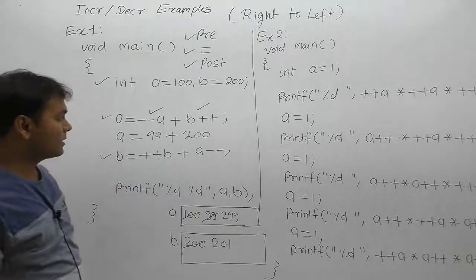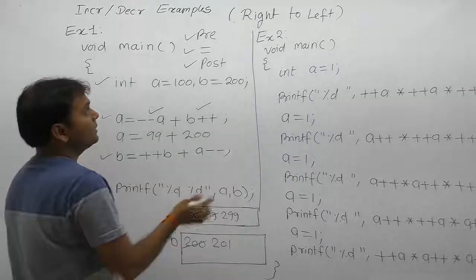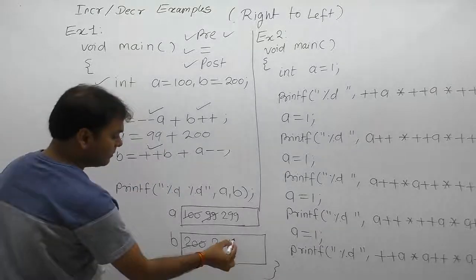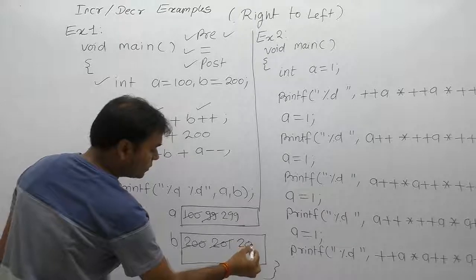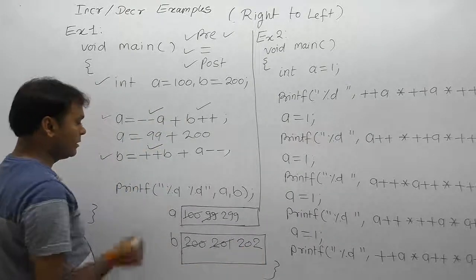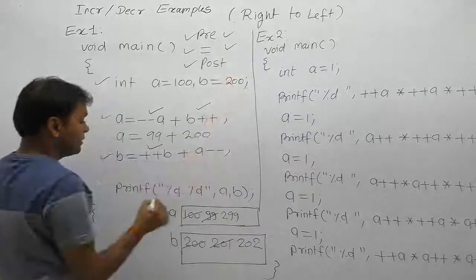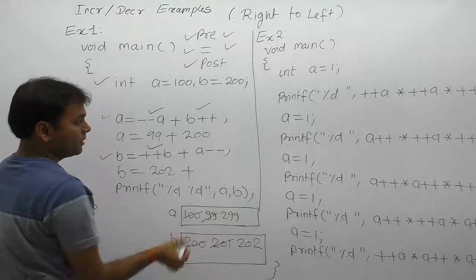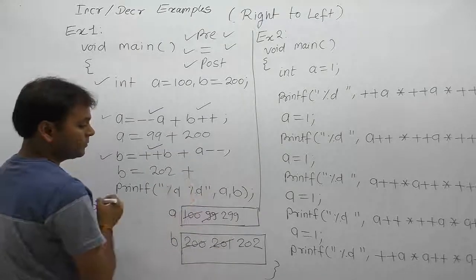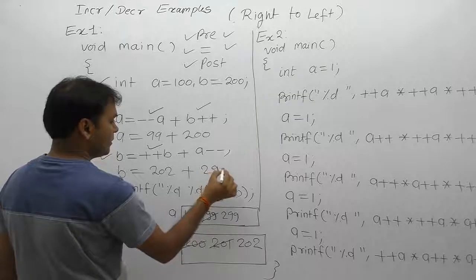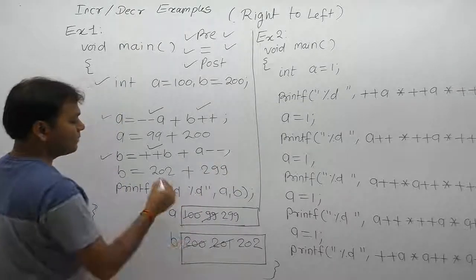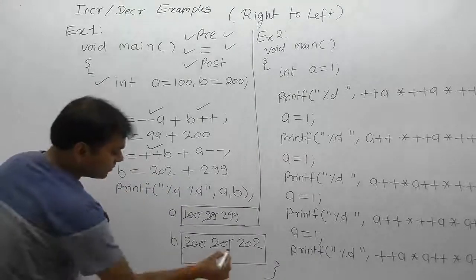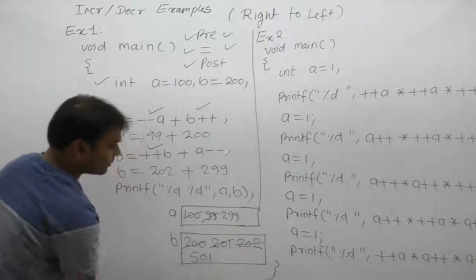Next we are solving the second expression. According to the same rules, we perform all pre first. How many pre operations are there? Only one — pre-increment in b. Now b becomes 202 because of pre-increment. Next, assignment: replace with the current value of b which is 202, plus the value of a which is 299. The sum is 501, which is assigned to b. Now b becomes 501.